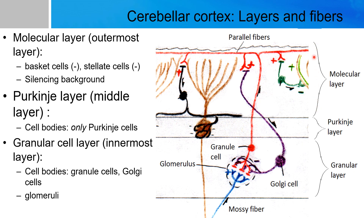The molecular layer is just deep to the pia mater and contains very few cells. This layer houses cell bodies of stellate and basket cells, which have an inhibitory effect on Purkinje cells, but are excited by parallel fibers of granule cells.